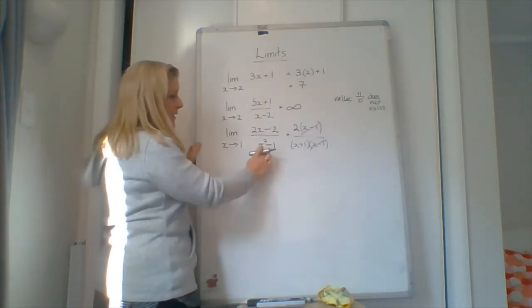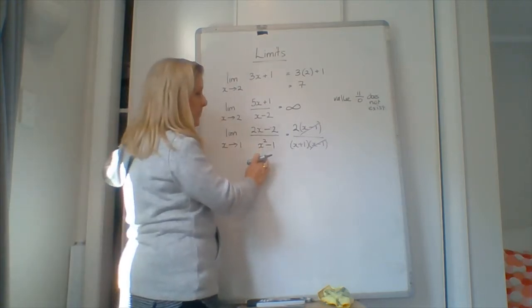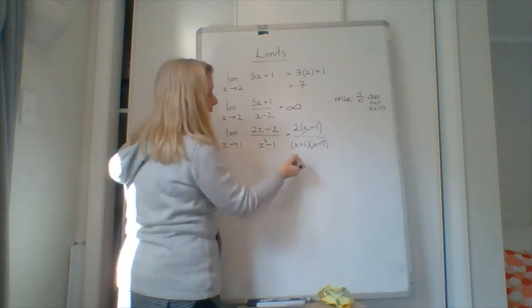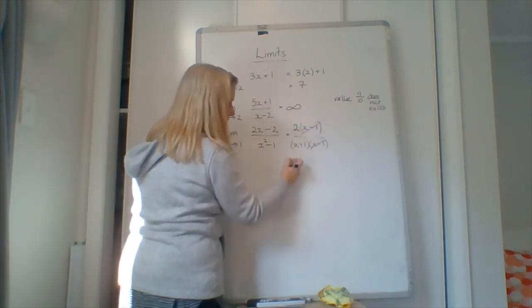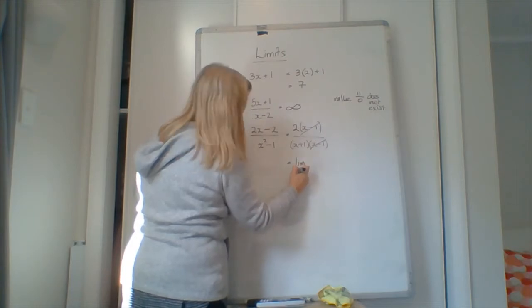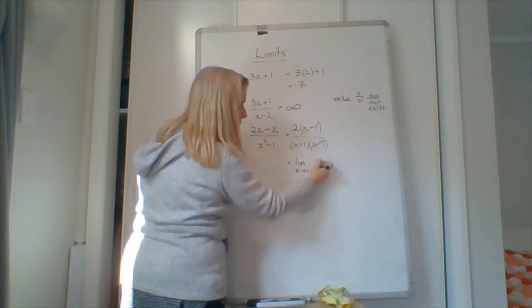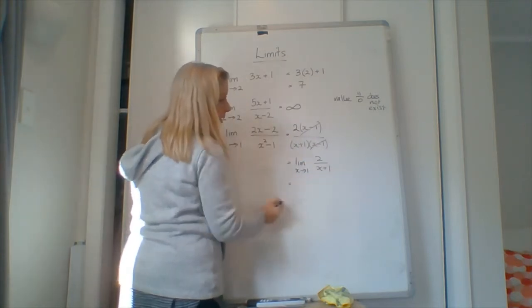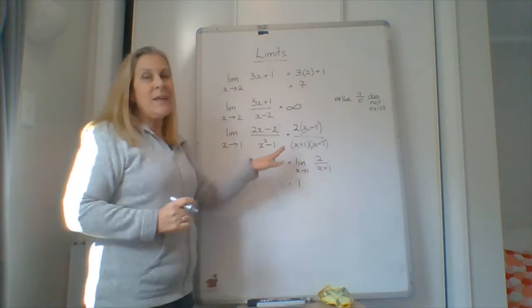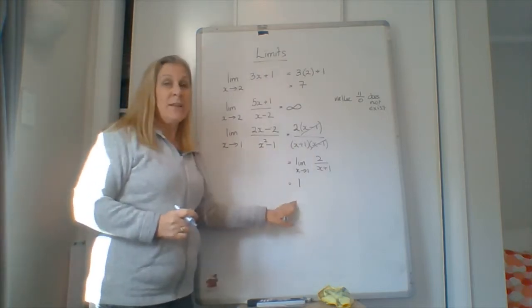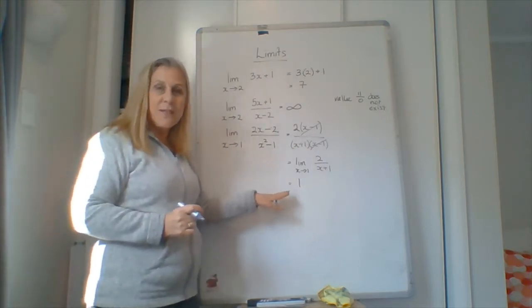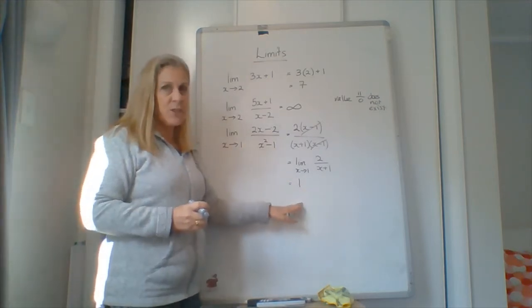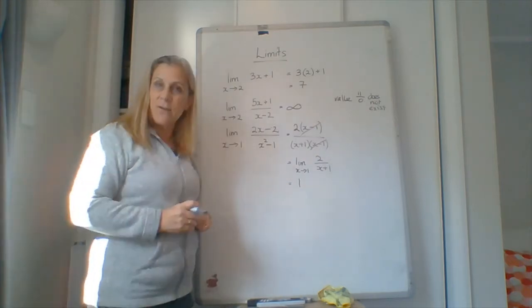If we put 1 in here, we would have got 0 on the bottom. If we put 1 in here, we would have got 0 on the bottom, so it still doesn't have a value. But now that we've cancelled it out, we're asking what's happening as we put 1 in of 2 over x plus 1. So 2 over 2 equals 1. So it appears that it should have been 1, but it's not going to exist. So the difference is what is the value and what is the limit. So that's the algebraic sense of it.